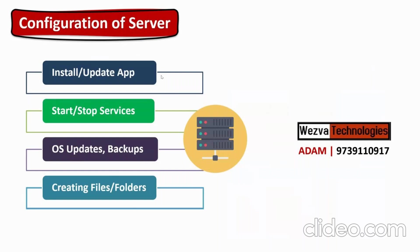So what do we mean by configuring a machine? Typically, you need to install all the applications or packages needed to support your dev, QA, or production activity. You also need to make sure certain services are running or stopped as needed, take frequent backups, keep updating the OS and kernel libraries, and it could be as simple as creating specific folders or files for your application to run. Configuration of a server means everything you do inside the server once it's created — installing applications, running services, creating files, or taking OS backups and updates.